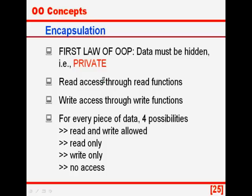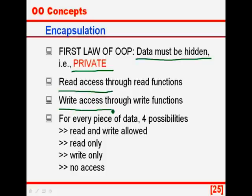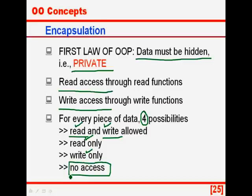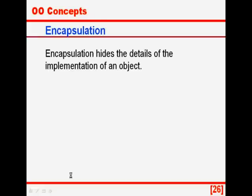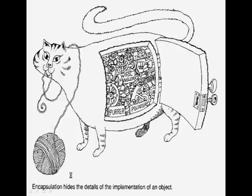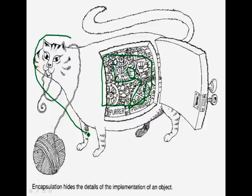The read function looks like this. So the first law of object oriented programming is encapsulation: data must be hidden, all data is private, with read access through read functions and write access through write functions. For every piece of data this leads to four possibilities: allow both reading and writing, read only, write only, or no access at all. Encapsulation hides the details of the implementation of an object — the internals of the cat are all hidden from us; we only see the external interface of the cat. Internal details are hidden — this is what is known as encapsulation.